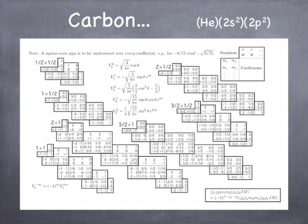First, I want to remind you of this table from Chapter 4 — the Clebsch-Gordon coefficients. You basically need these any time you need to add two angular momenta together. They're difficult enough to compute, and they're used often enough that people have created tables so that we don't have to compute them.